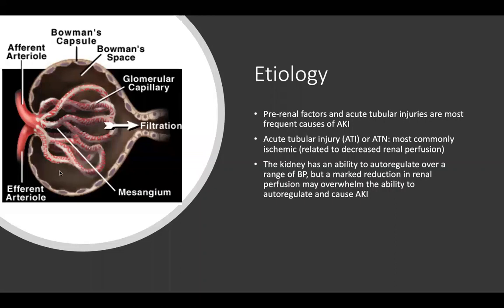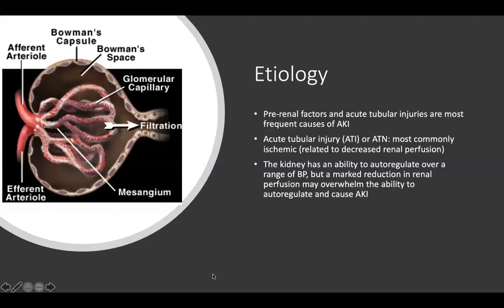Medications also affect auto-regulation. NSAIDs block prostaglandins, which normally promote afferent arteriole dilation in response to low blood pressure. ACE inhibitors and ARBs block angiotensin 2, which normally constricts the efferent arteriole to maintain glomerular pressure. These are good drugs for heart disease, blood pressure, and chronic kidney disease — but in the setting of hypotension or volume depletion, they impair the kidney's ability to compensate and should be held.